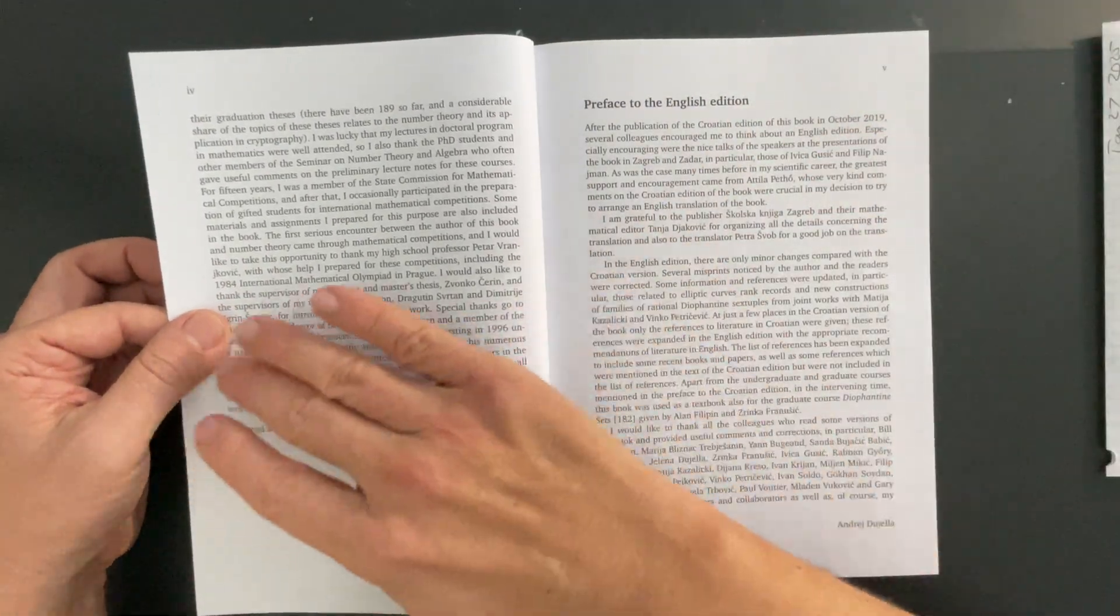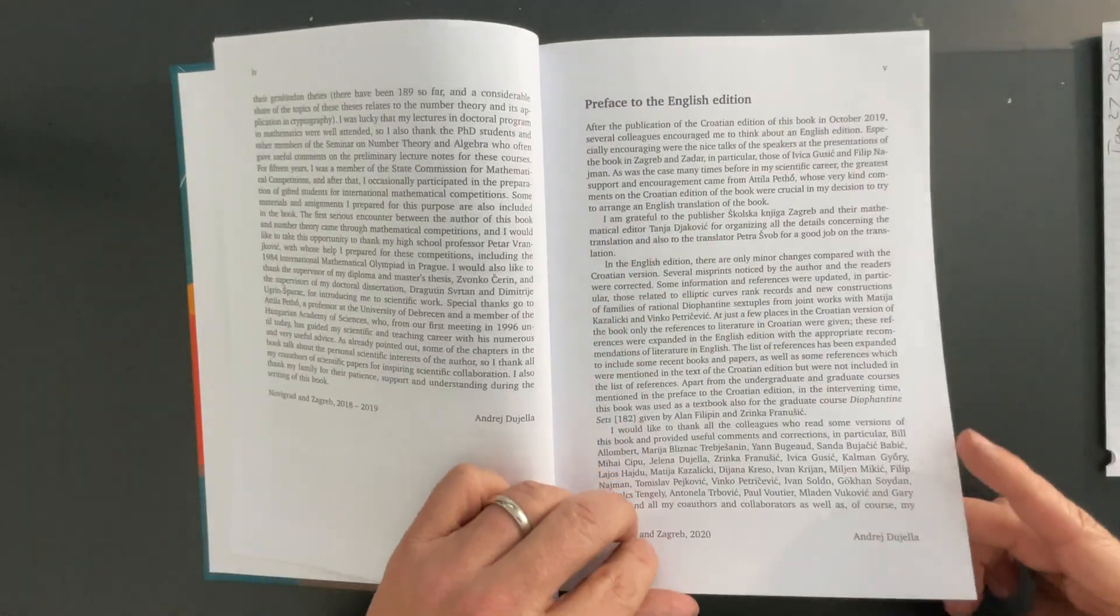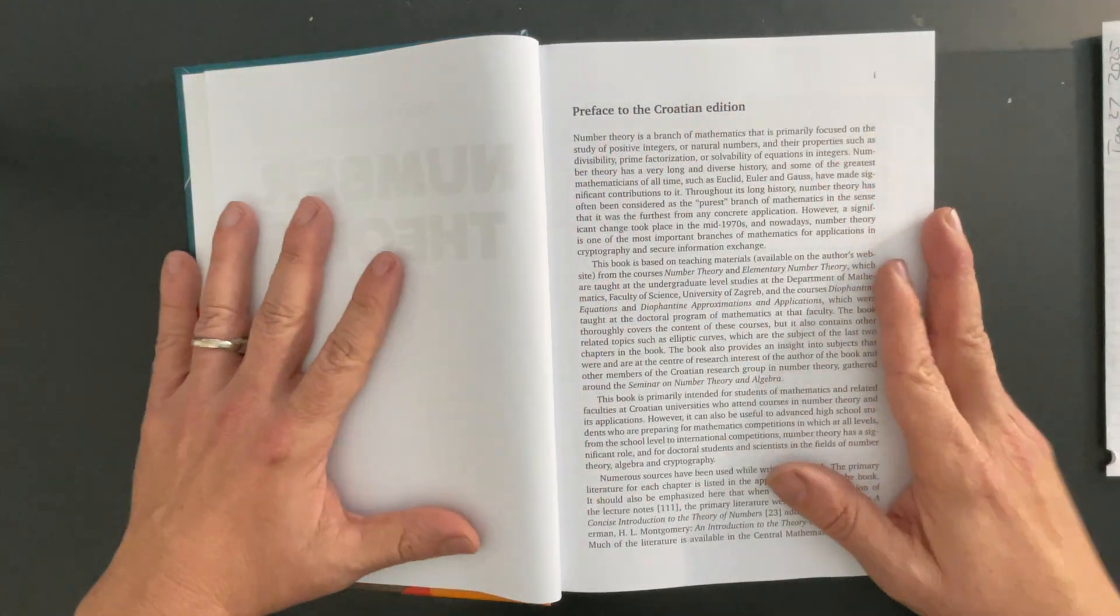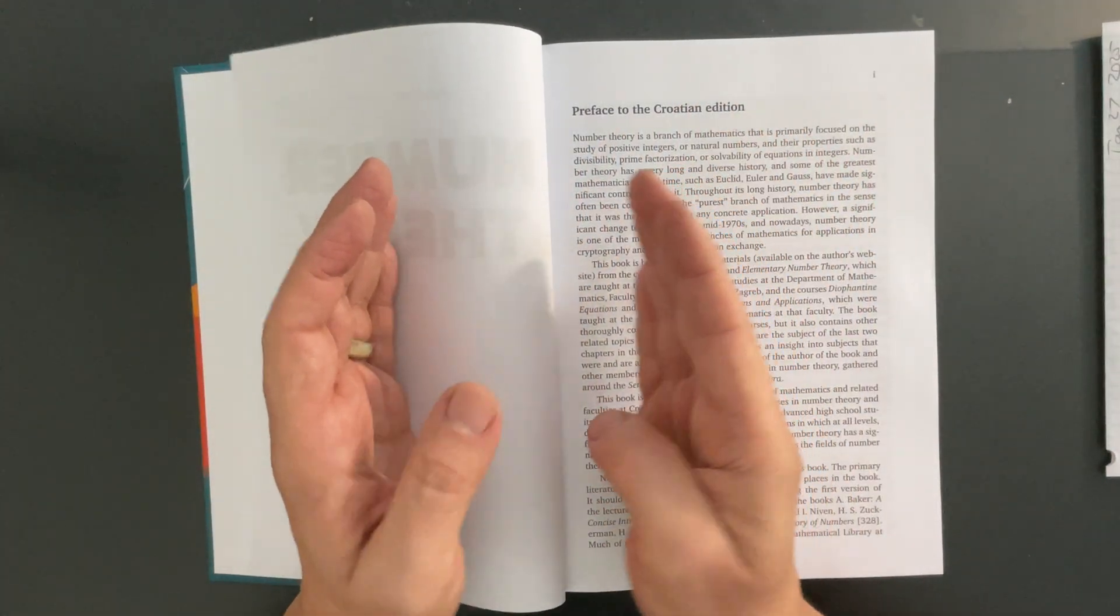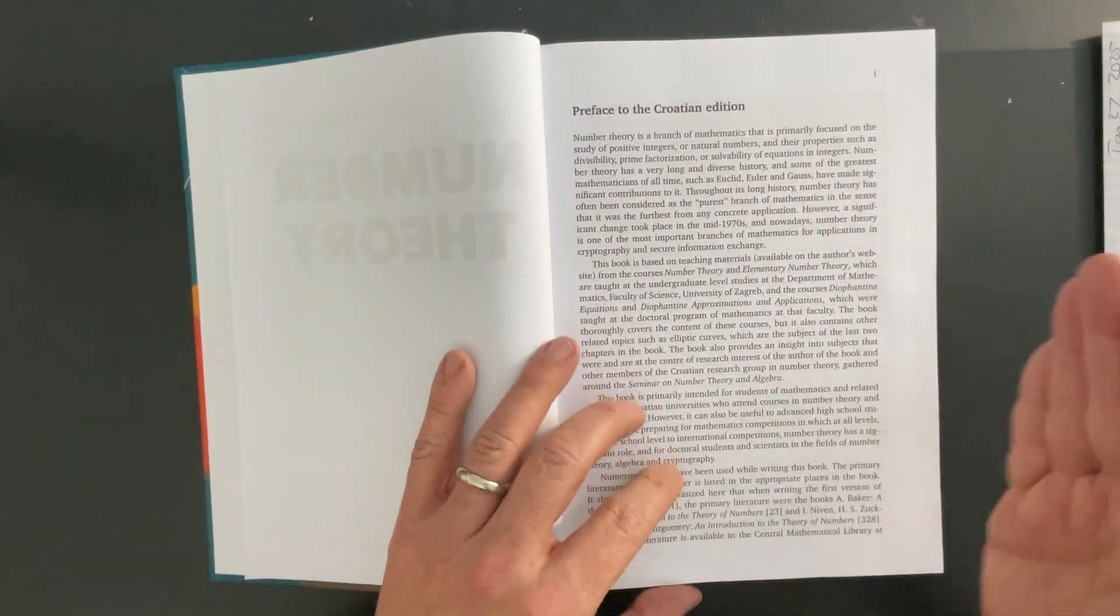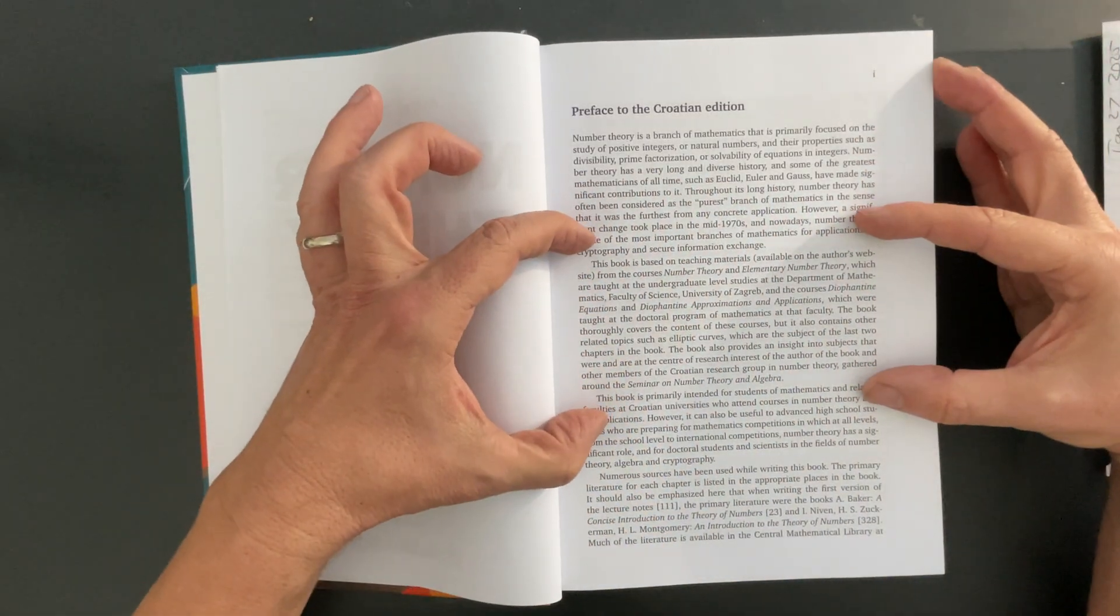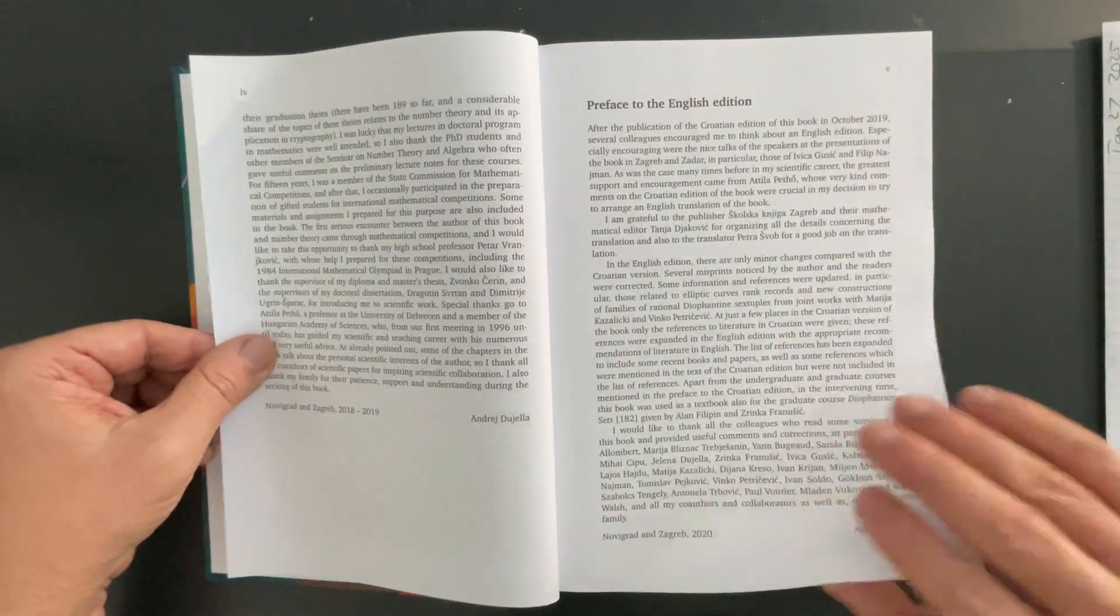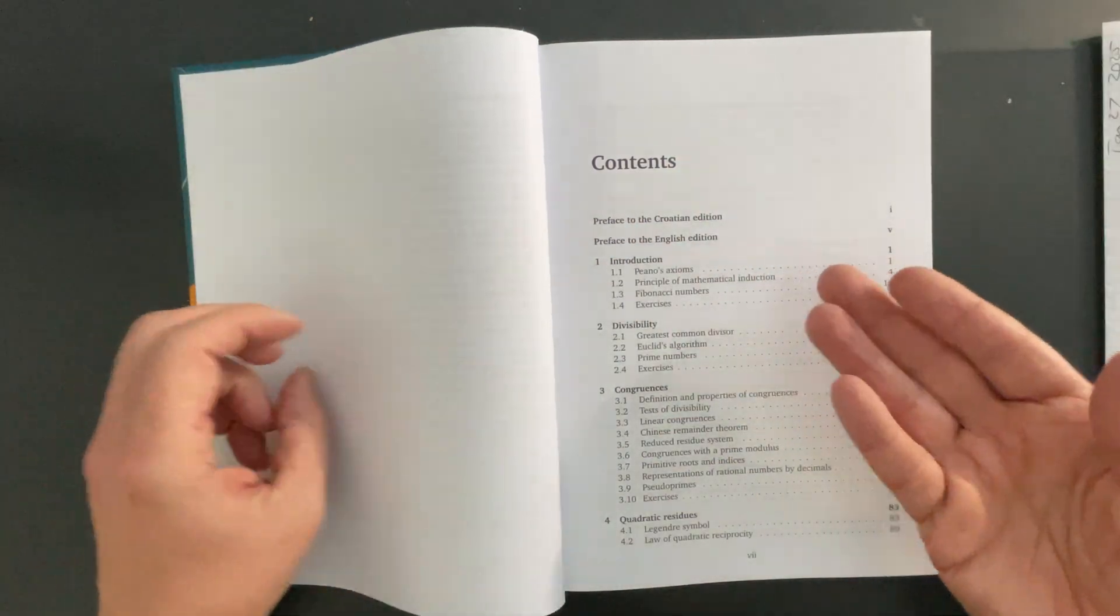You could have paused that and read that part. It's got its own preface to the English edition. But, basically, the book is sort of like two books in one, which I really like. It's got your intro material that you would get in a typical number theory course. And then, it's got a lot of Diophantine equations content, which I think is great because that's perfect for my number theory second round.